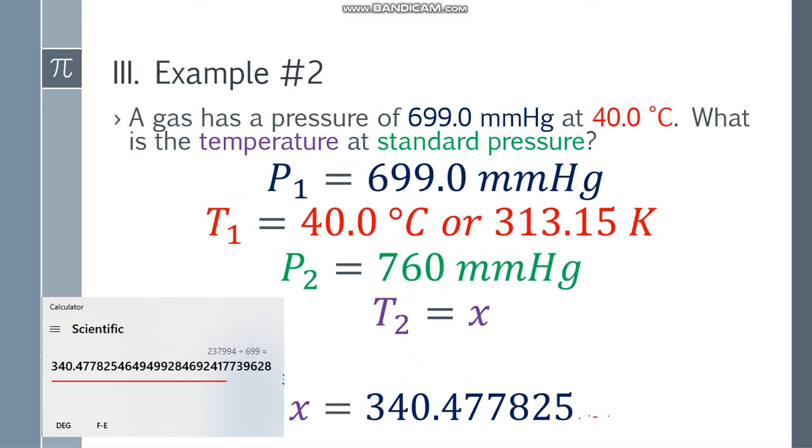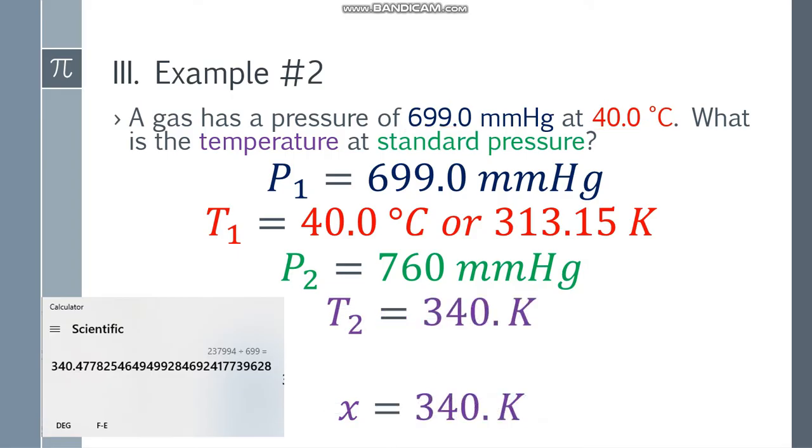For the final answer, let's get the least number of significant figures. 699.0 has 4 significant figures, 40.0 has 3 significant figures. So we take 3 figures, which gives us 340. Since the next digit is 4, round down. So the final answer is 340 Kelvin.